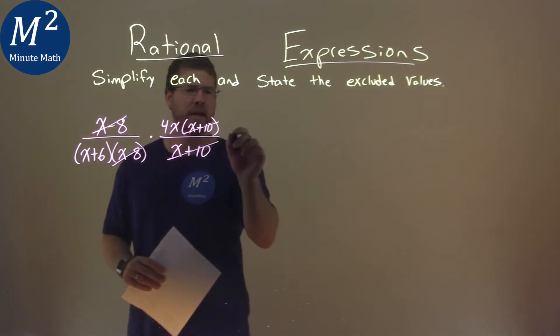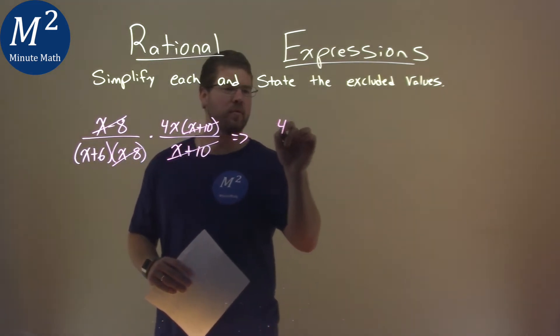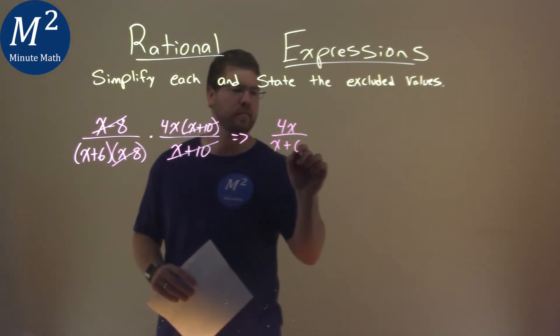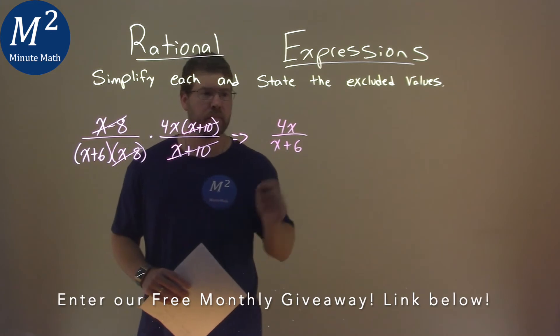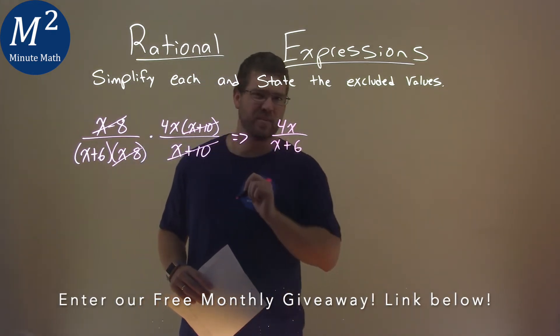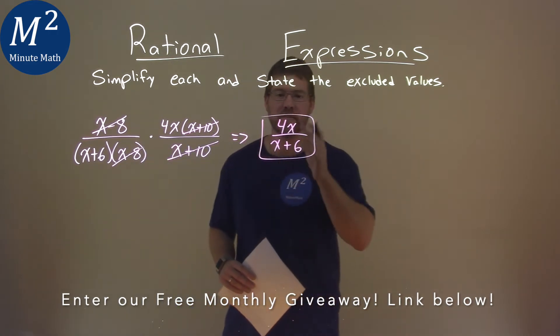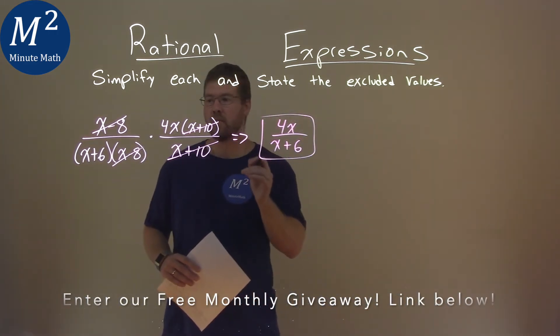Nothing else I really see cancels and so we're left with 4x in the numerator and x plus 6 in the denominator. This can't really simplify anymore and so that is our answer, the simplified expression 4x over x plus 6.